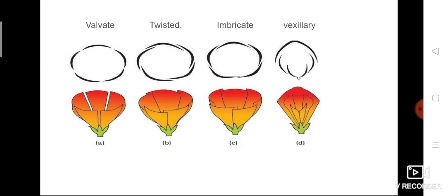The next type is twisted estivation. In twisted estivation the margin of one petal overlaps the margin of another petal. In picture B you can see that one petal overlaps the next petal, and the next petal overlaps the one after, all in a specific direction.